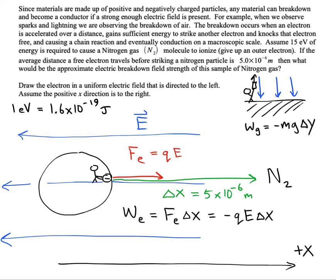So, with that conversion, we'll have 15 eV times 1.6 e minus 19 joules per eV.